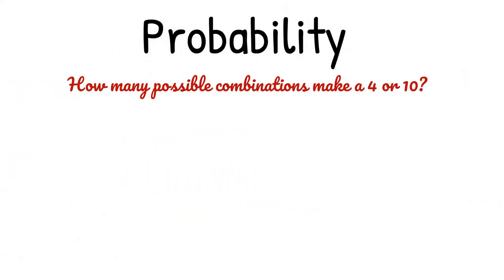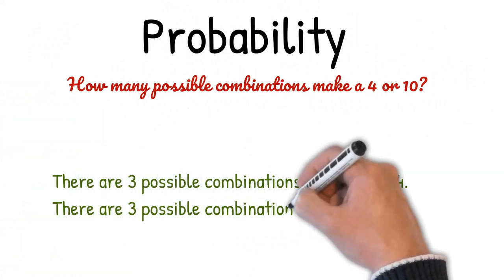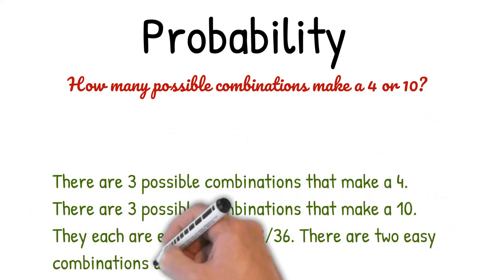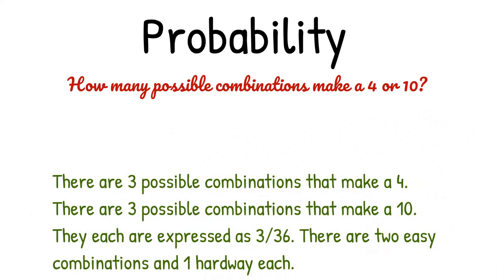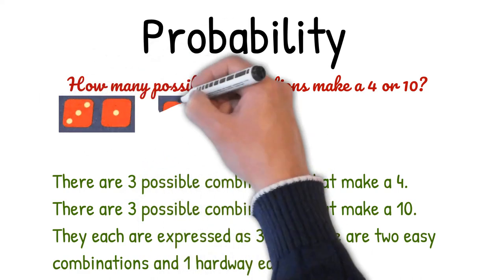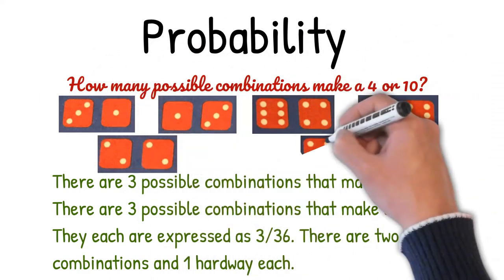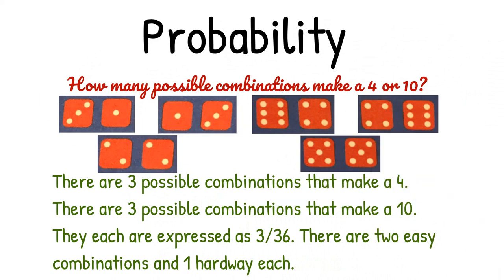How many possible combinations make a four or ten? There are three possible combinations that make a four and three that make a ten, each expressed as three out of thirty-six. There are two easy combinations and one hard way each. The combinations for four are three-one, one-three, and two-two. The combinations for ten are six-four, four-six, and five-five.